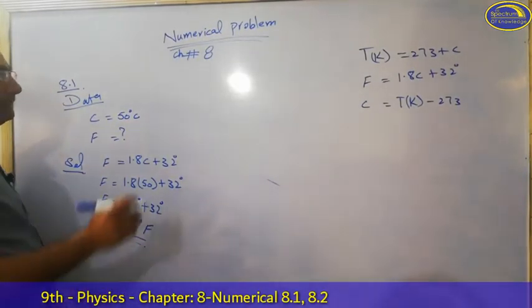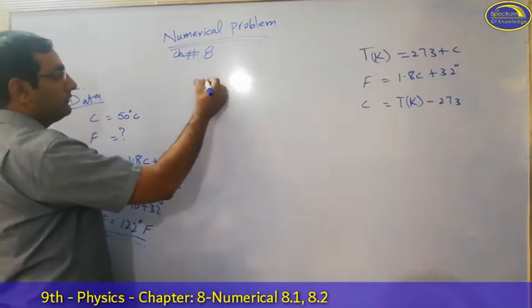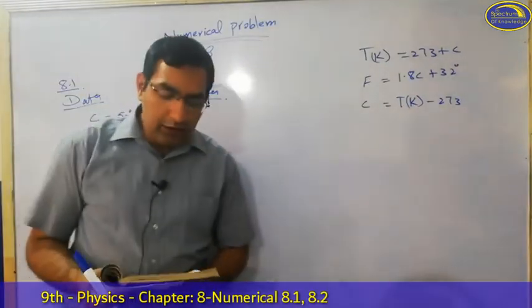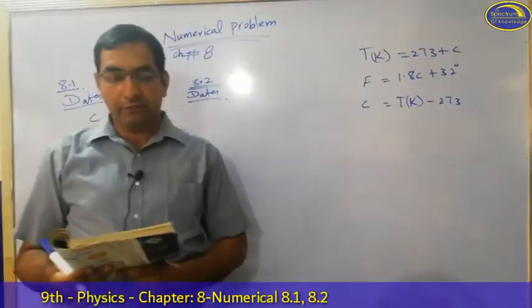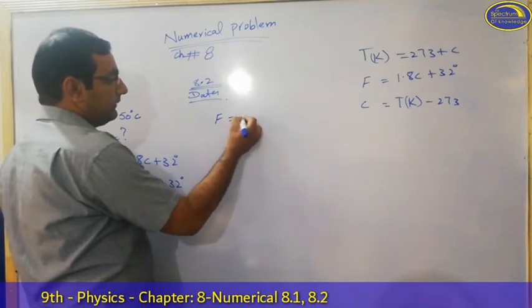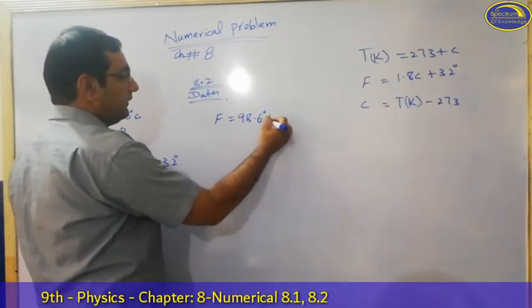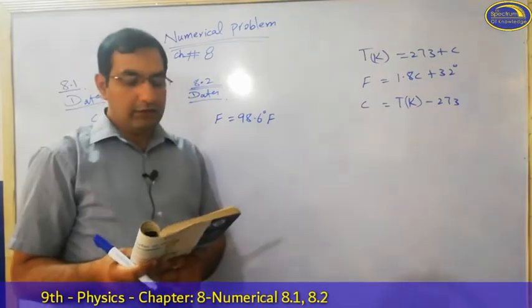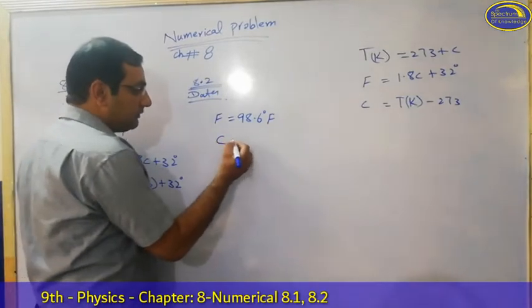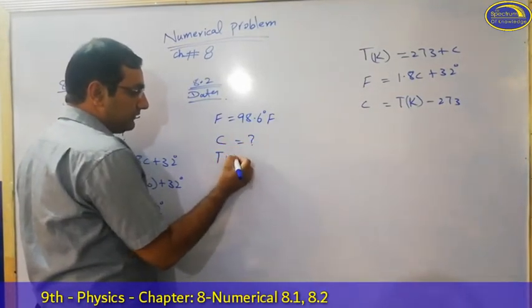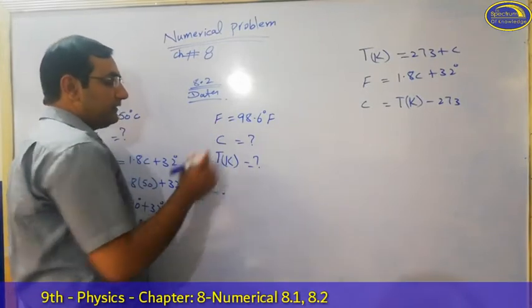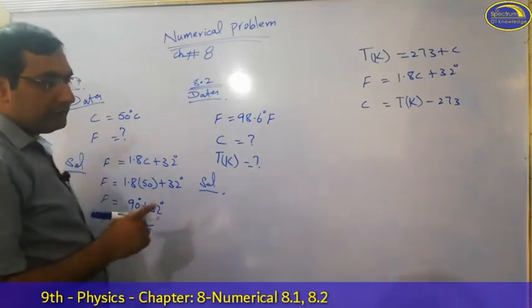Now we are talking about problem 8.2. Now we have got a temperature, it is 98.6 degree Fahrenheit. So we have to convert it into Celsius scale and Kelvin scale. We have to convert it into Celsius and Kelvin.